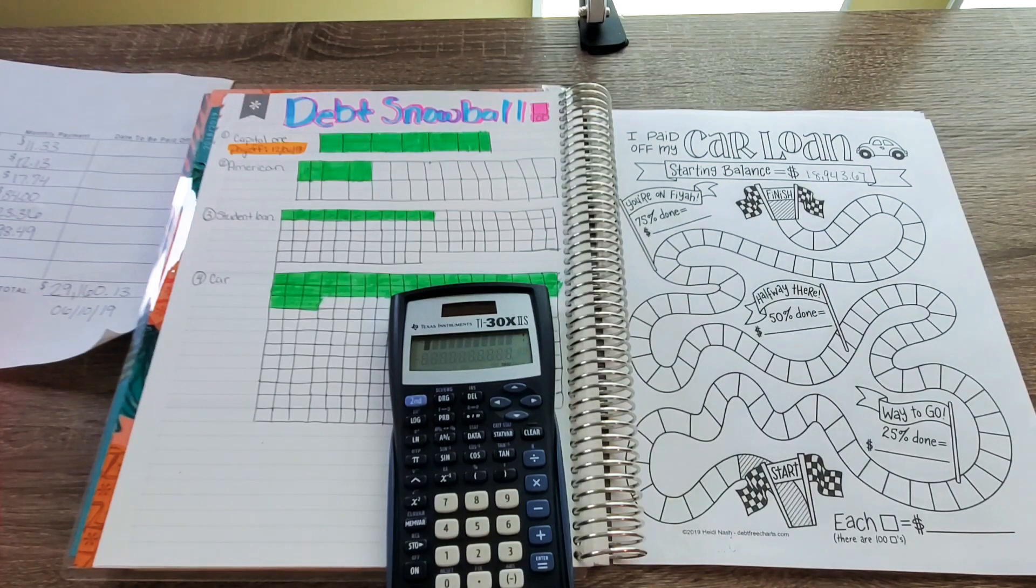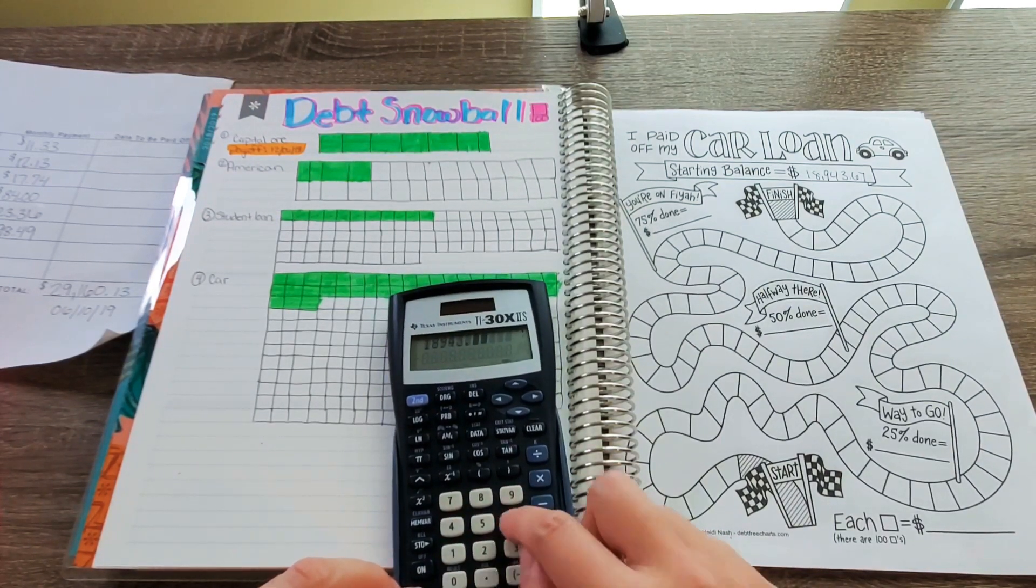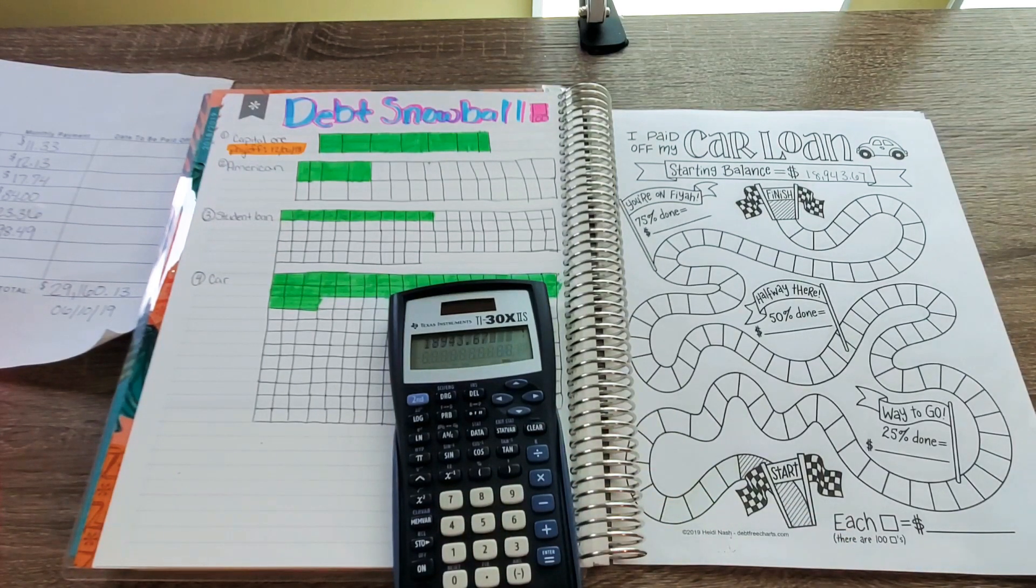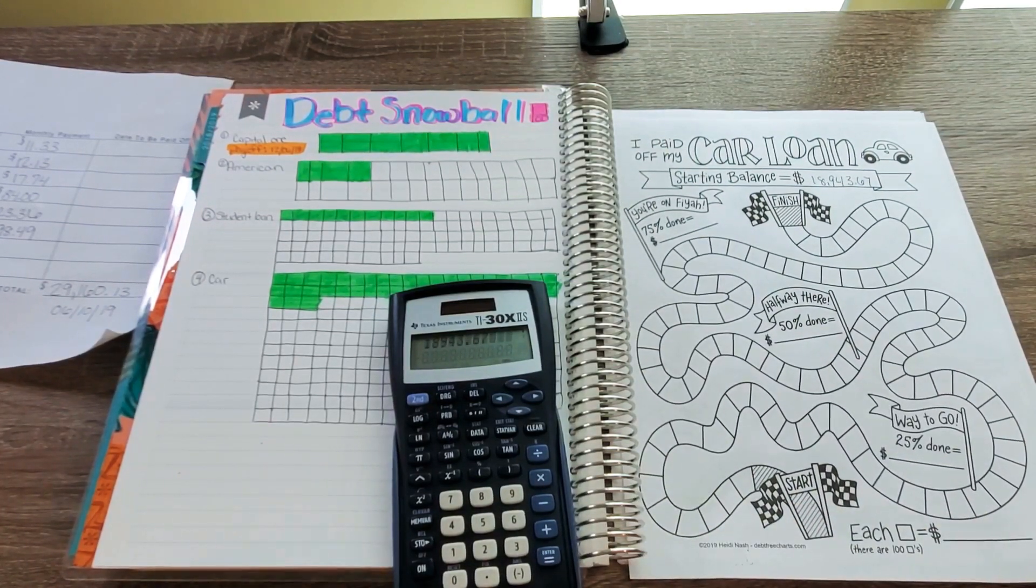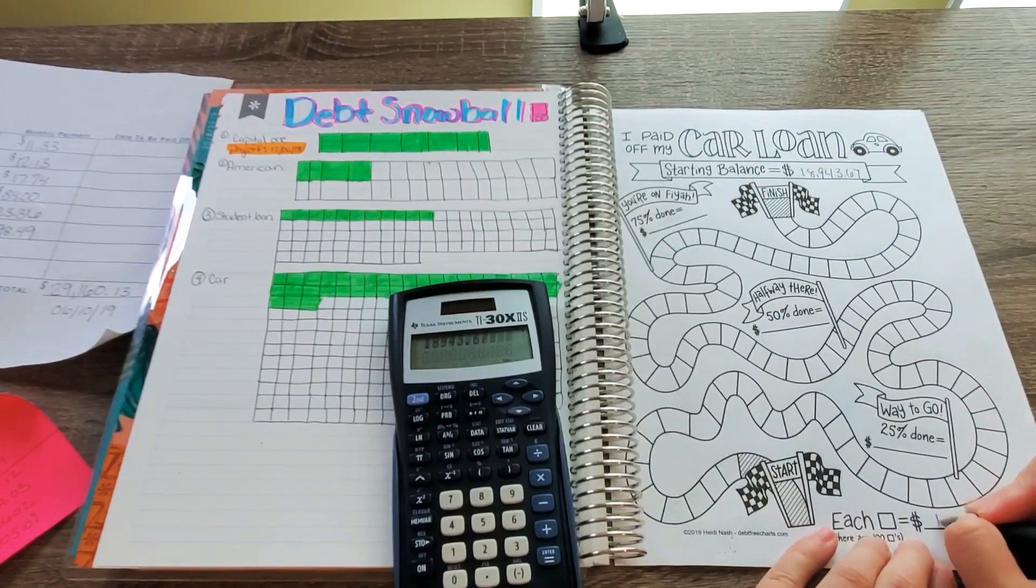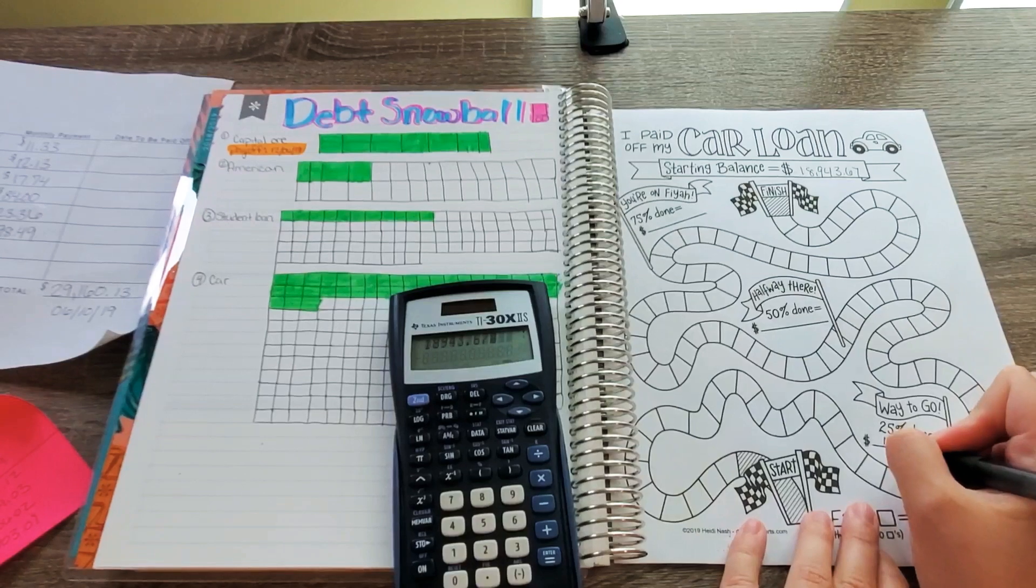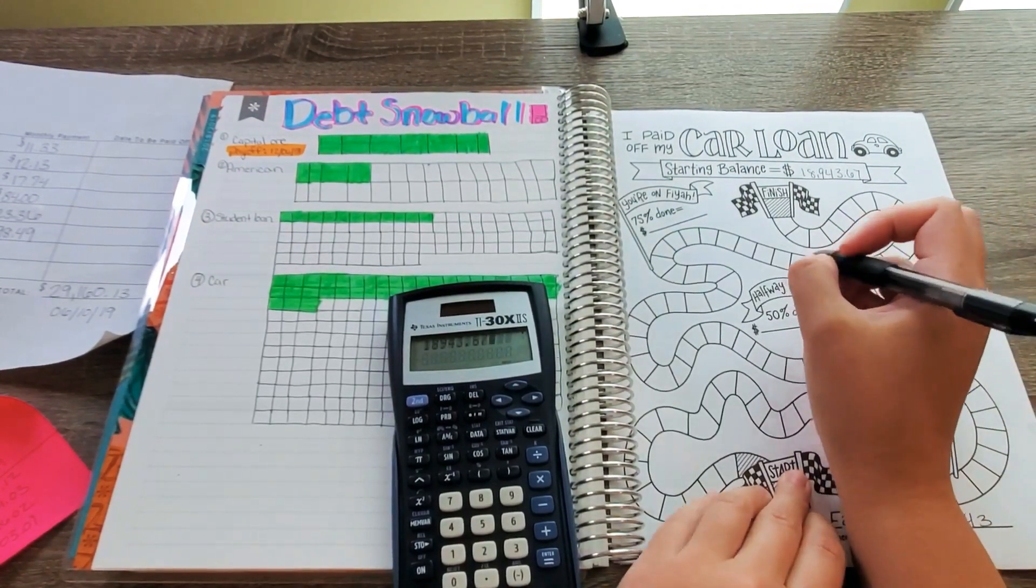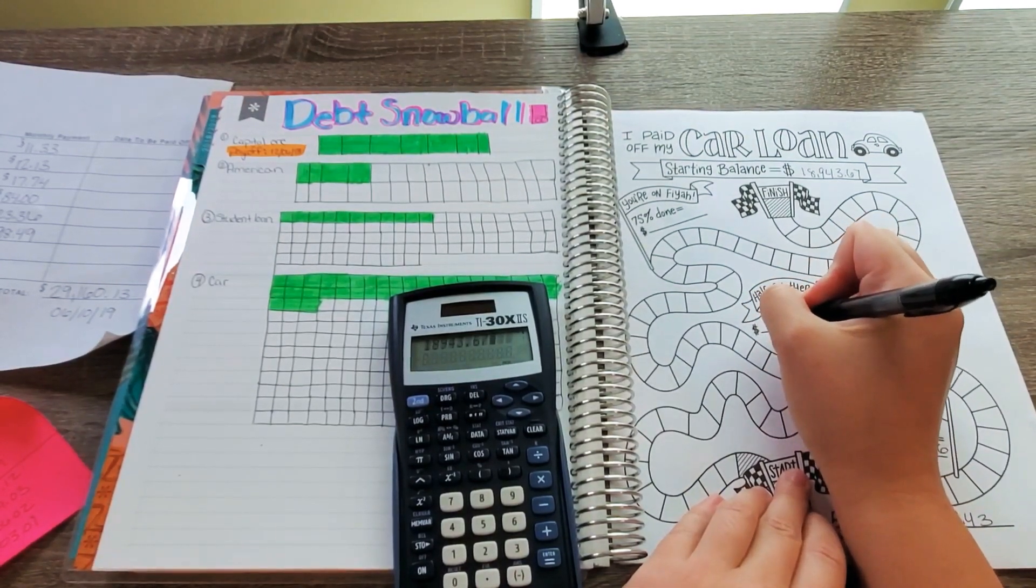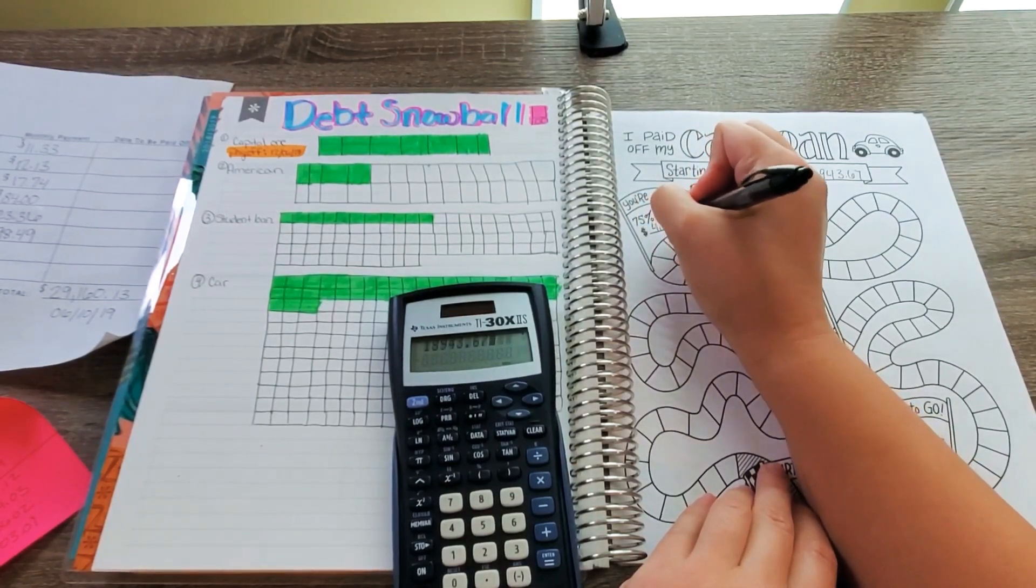Okay, alright, so car loan is my biggest, biggest debt of them all. It is a lease. I did not buy it outright. I did not finance it or anything like that. So the balance is $18,943.67, you guys. Alright, so we are going to, before we get into the new balance, we are going to put in our numbers. So the car, each box will be $189.43. 25% of the way will be $14,207.76. 50% of the way, which I'm so ready to be 50% of the way, is $9,471.83. And then 75% of the way will be $4,735.92.